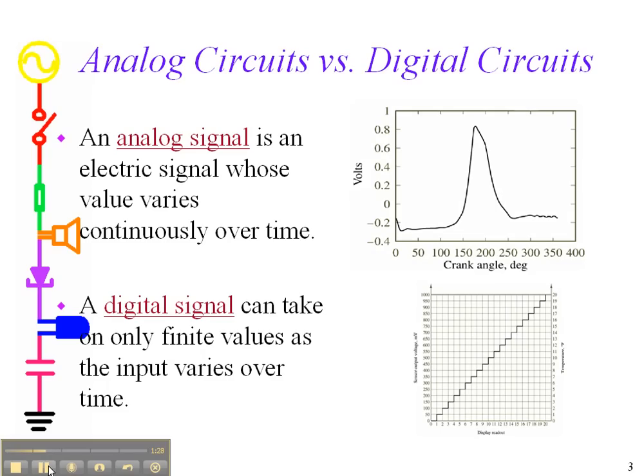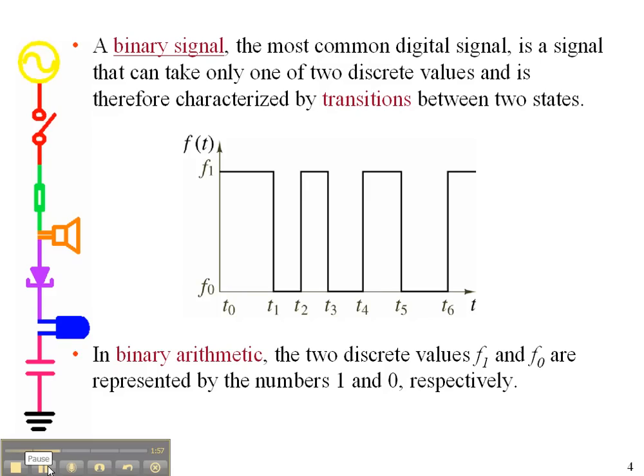As I mentioned, an analog signal is a signal whose value varies continuously over time, and we can see right in this region here, a function that's varying continuously. A digital signal can only take on discrete values—in this case, it shows that it's going from 0 to 50 to 100 to 150, but doesn't take on any of the values in between. Now, the most common digital signal is the binary signal, which is listed up here, which just switches back and forth between two states: a high state and a low state. These are represented by the numbers 1 and 0, and so we will have binary arithmetic where the only two numbers we actually use are 0 and 1.